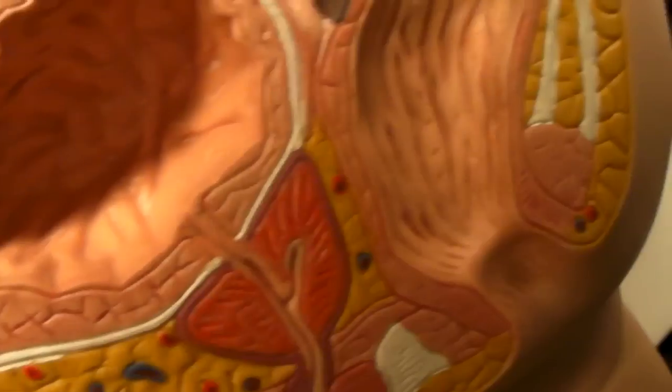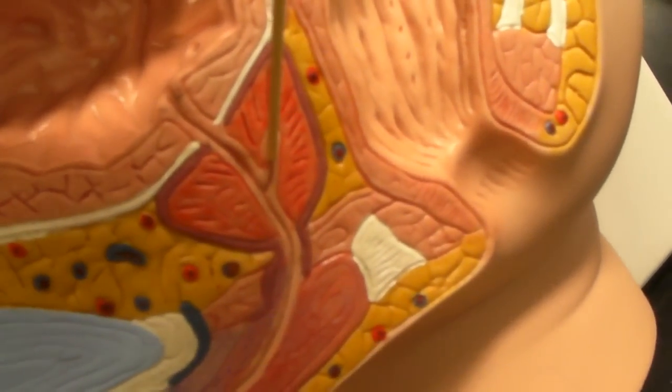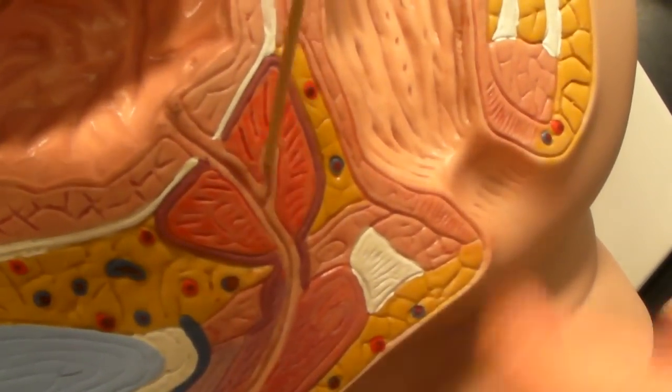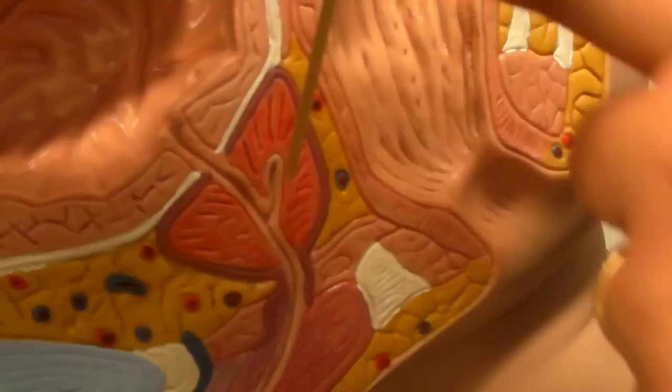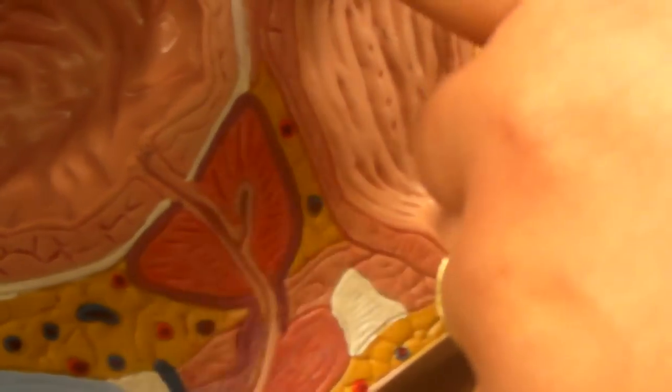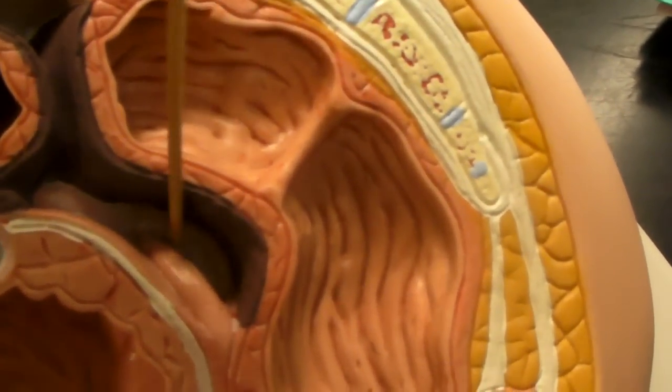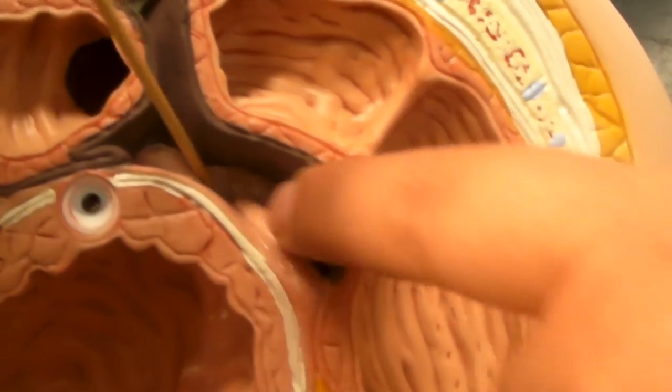So is this part of the ductus deferens? I don't know if it's called the ductus deferens at that point, but that's where it joins in. It's the seminal vesicle. So the seminal vesicle is over here, right? This is the seminal vesicle? Mm-hmm. Right here? This big one right here.